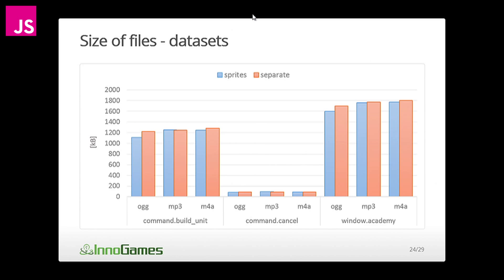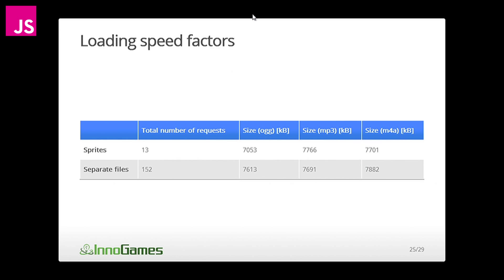The last thing tested is file size. OGG is always smaller. MP3 is sometimes smaller, sometimes bigger — with bigger files it's usually a little smaller, with others a little bigger. M4A shows only a slight difference. Regarding request count: in the Grepolis game, we went down from 152 requests for sounds to just 13, which is about 8% of the original — quite impressive.